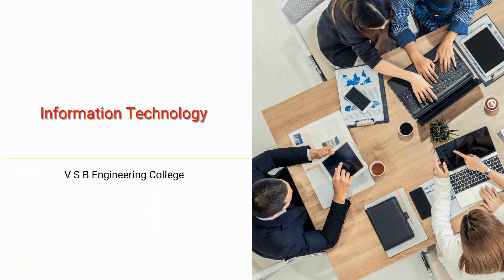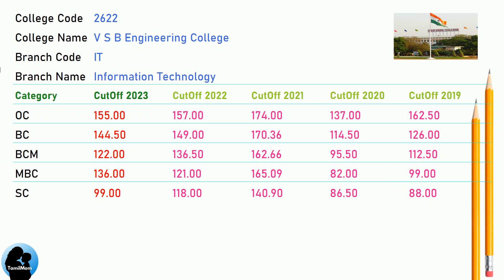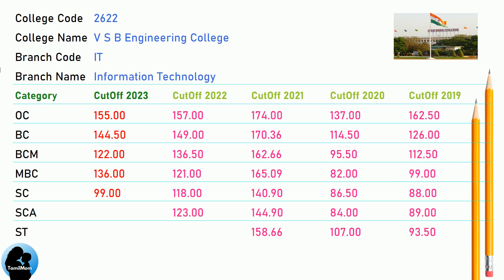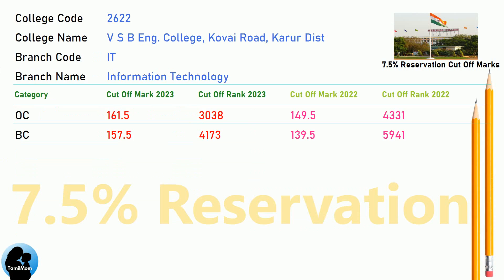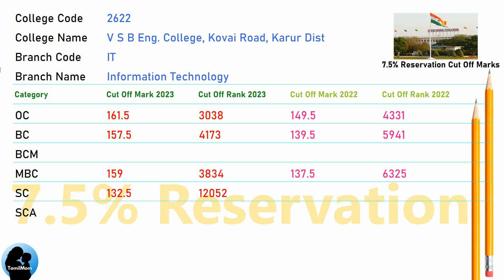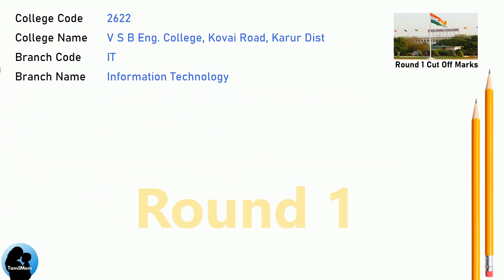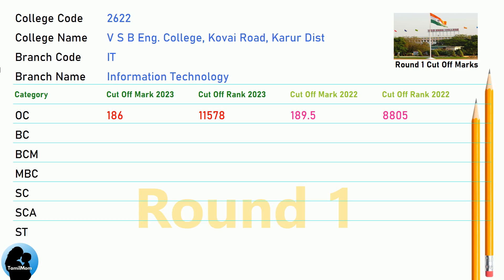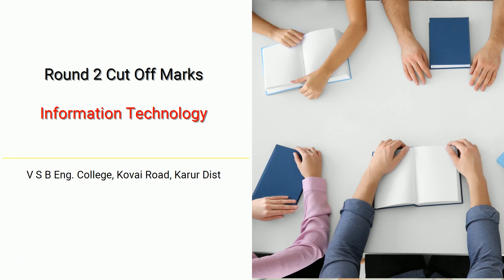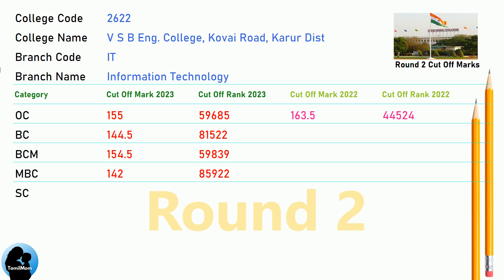DNA Cut-Off for VSB Engineering College in Information Technology. DNA 7.5 Reservation Cut-Off for VSB Engineering College in Information Technology. DNA Round 1 Cut-Off for VSB Engineering College in Information Technology. DNA 8.5 Reservation Cut-Off for VSB Engineering College in Information Technology. DNA Round 2 Cut-Off for VSB Engineering College in Information Technology.